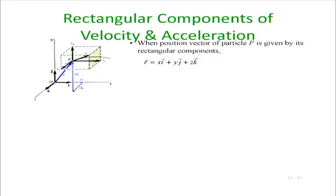If we understand how the velocity vector changes as a function of time, that will automatically give us the corresponding acceleration. The simplest way of defining positions and velocity is in terms of rectangular components. You fix the coordinate axis at some origin O, and at any point the position is given by x i-hat plus y j-hat plus z k-hat, where i, j, k are unit vectors along x, y and z directions.